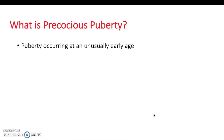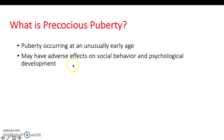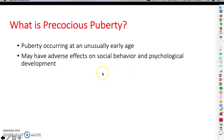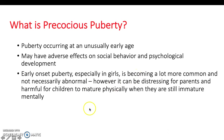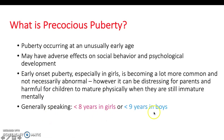Precocious puberty is puberty beginning at an unusually early age, and it may have adverse effects — either on social behaviour or psychologically, as it can be quite difficult to have these experiences at an early age compared to your peers. Early onset puberty, especially in girls, is becoming more common and is not necessarily abnormal. That's why these ages are a rough guide, but it can be distressing for parents or children if they're still immature mentally but physically developing. Generally speaking, it's under eight years in girls or nine years in boys.